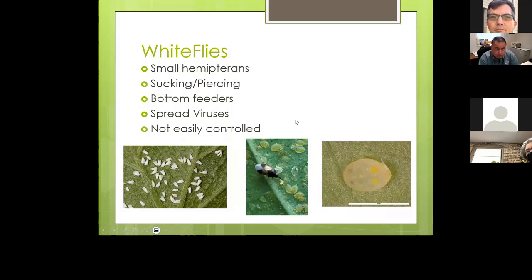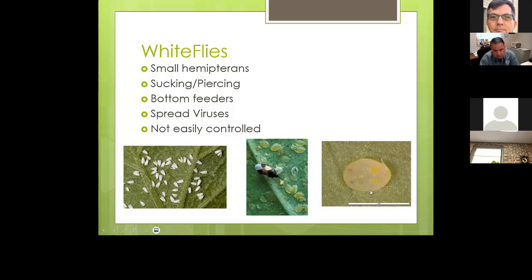Whiteflies are hemipterans with sucking and piercing mouthparts. They always feed on the bottom side of the leaf, not the top. They are a vector of viruses and are very difficult to control. The picture on the left shows adult whiteflies alongside tomato leaf veins so you can see how small they are. With a large infestation, shaking the plant can cause them to fly up and look like a cloud of insects. Also shown are the eggs and a beneficial beetle eating those eggs.